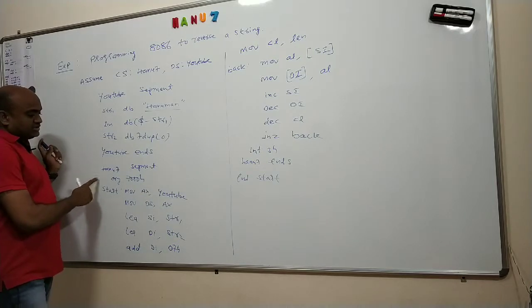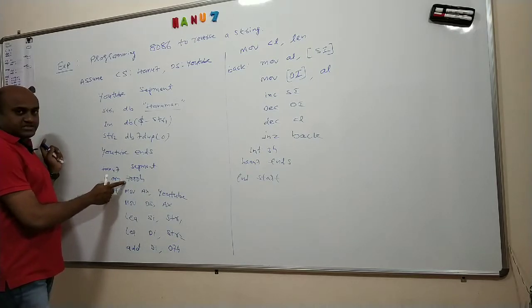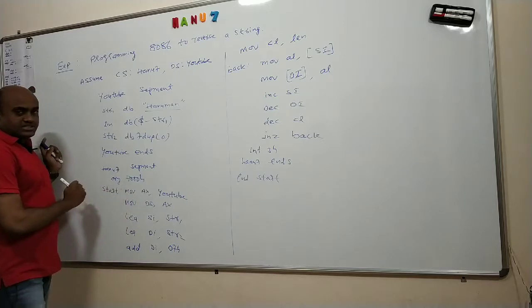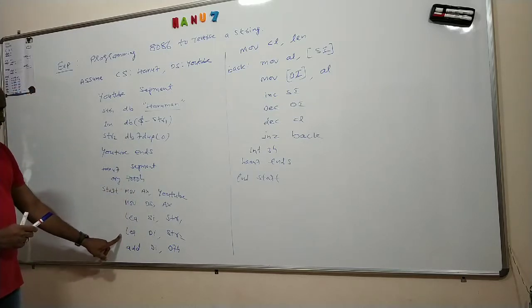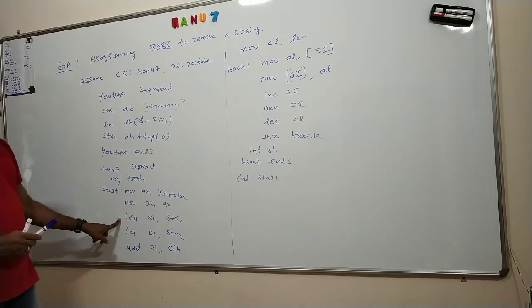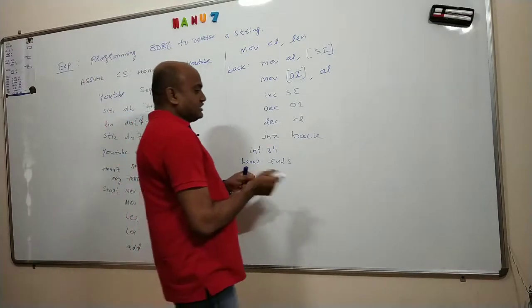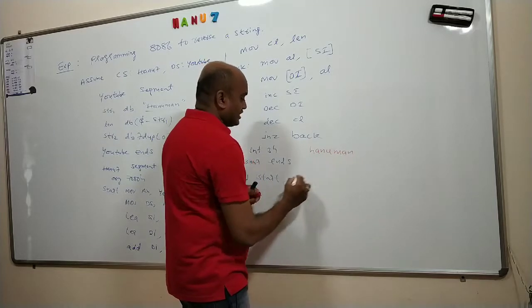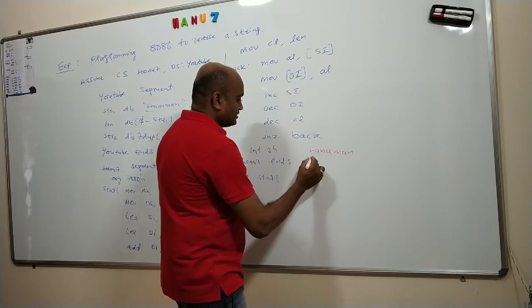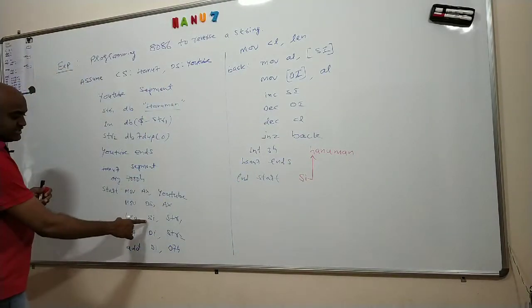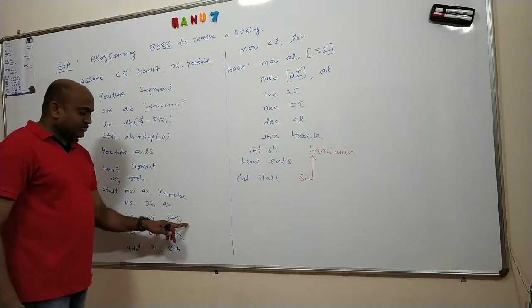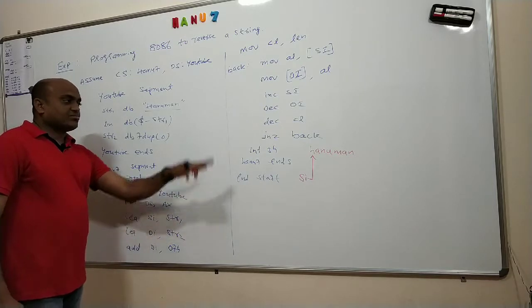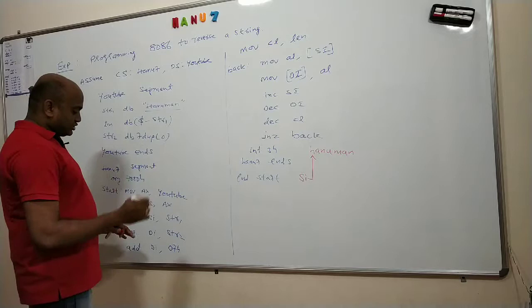In the core segment, this time I am starting my program at 7000 hexadecimal locations, so indicating ORG 7000H. These two are the data segment initialization steps. First I am using LEA SI, STR1. I am indicating this is my input string H A N U M A N. I am using SI as a pointer to this memory. LEA SI, STR1 will calculate the effective address of STR1 and load that value into SI. Now SI will point to the particular memory where your input string is stored.